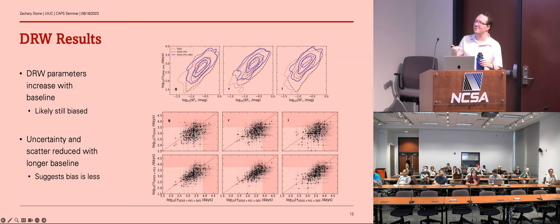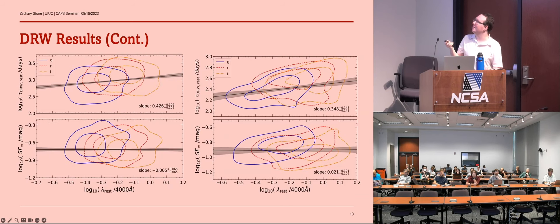So this suggests that our results are still biased, at least somewhat, because if they weren't biased, then they'd be constant even if we increase the baseline. However, the scatter and uncertainty in these parameters decrease a little bit. We can see that it kind of tightens as we increase the baseline, but it's not very significant. So we still need longer baselines even after 20 years to get accurate timescale parameters and accurately parameterize the variability in the optical.